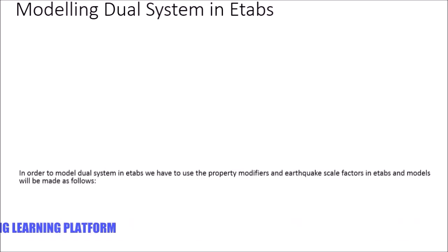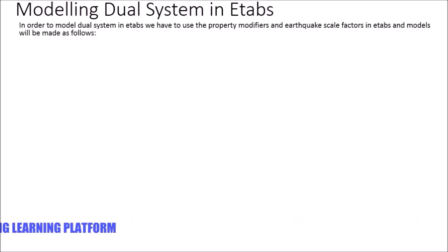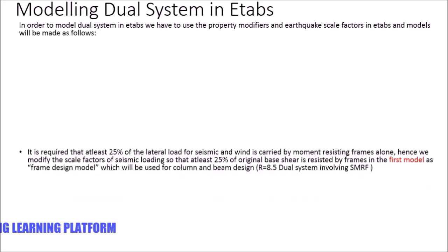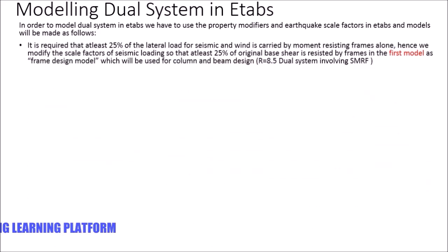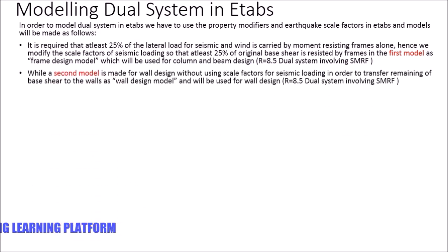Modeling the dual system in E-tabs: in order to model a dual system in E-tabs we have to use property modifiers and the scale factor for earthquake. It is required that at least 25% of the lateral load for seismic and wind is carried by frames. Hence we modify the scale factor of load so that at least 25% of the original base shear is resisted by the frame — this is the first model, used for frame design. A second model is made for wall design, which will be used in this video for the design of the shear wall.